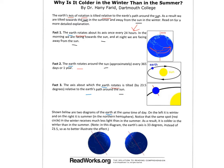So how does all this fit into why it's colder in the winter than in the summer? Let's look at the last chunk. Shown below are two diagrams of the earth at the same time of day. It looks as if we have Africa and Australia on opposite sides. On the left, it is winter, and on the right, it is summer in the northern hemisphere. Notice that the same spot — the red circle — in the winter receives much less light than in the summer. As a result, it is colder in the winter than in the summer.